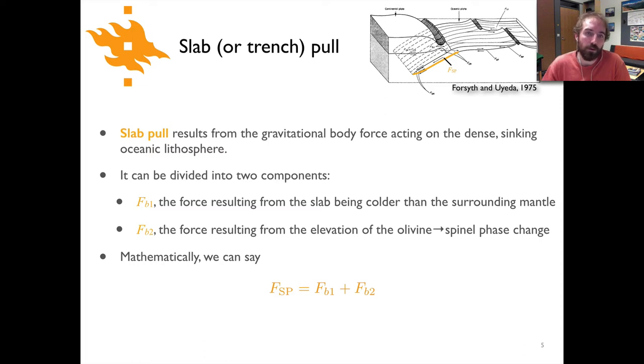Now when we talk about slab pull, there's basically two components that we need to consider. First off, in general we're talking about a gravitational body force that's acting on the lithospheric slab or plate that's being subducted because of its relatively high density compared to the surrounding asthenosphere. Now there's essentially two components to the force: the first being the component that is the result of the slab being colder than the surrounding mantle, so when it's colder it's relatively dense and will tend to sink for that reason. And there's another component that has to do with the phase transition, and we'll talk about that in the next video lecture. But in general we could simply say that the slab pull force is the combination of the relatively cold slab component plus the phase transition component, and we'll look at the slab temperature component in this lecture here.